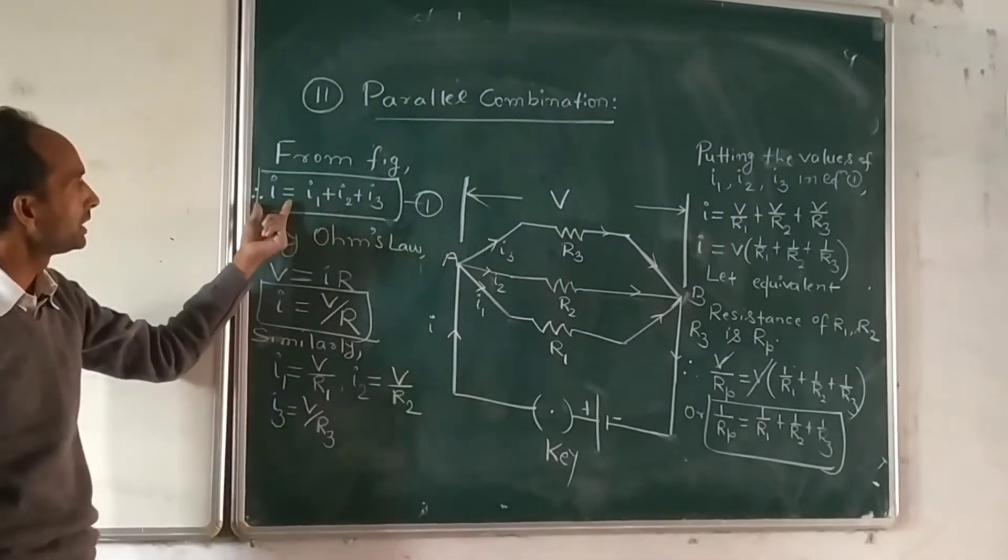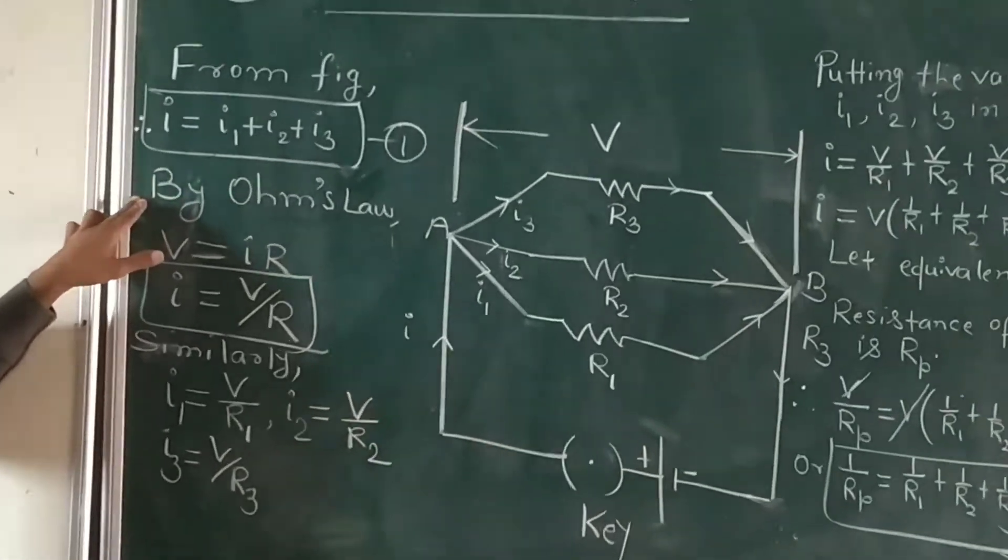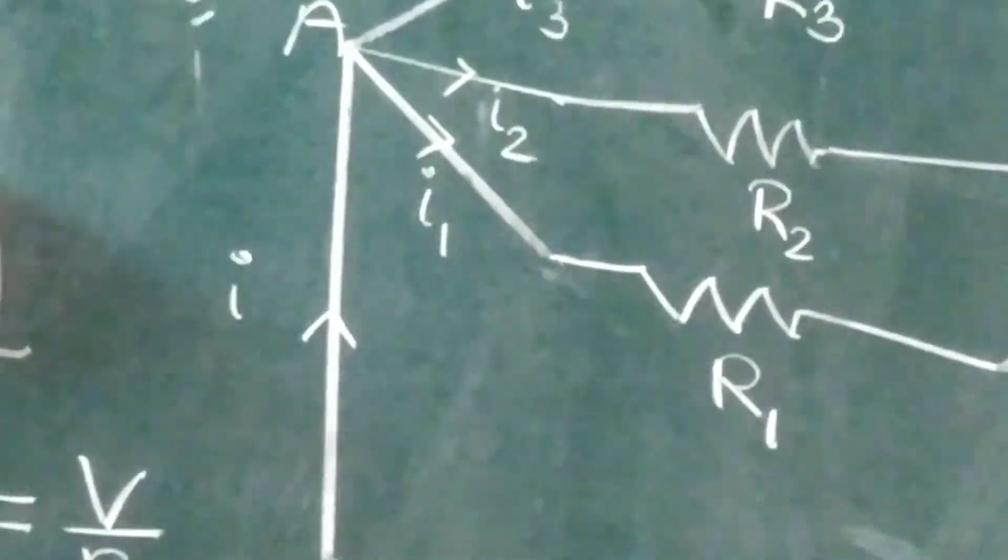By Ohm's law, V equals IR, or I equals V by R.